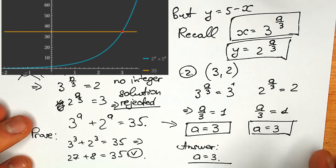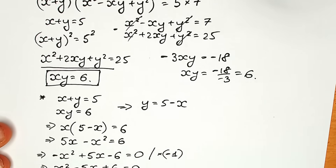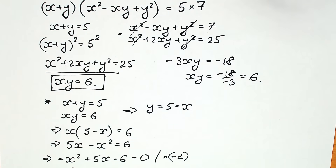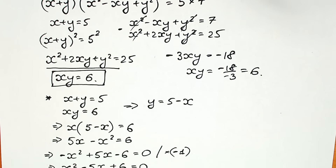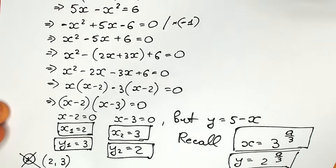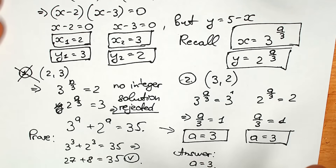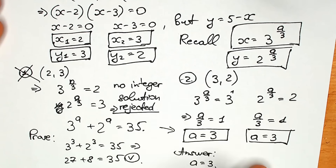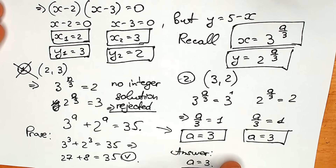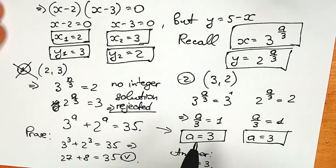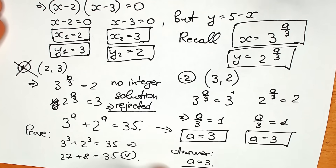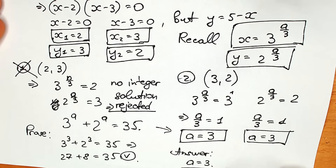So the answer is a = 3. You can pause the video and review the solution. We also covered the first case for finding integer solutions, which is important for exam situations requiring all real number roots. In terms of integers, a equals 3. I hope you enjoy it — write your comments in the comment section, and see you in the next videos. Have a great day and take care of yourself!